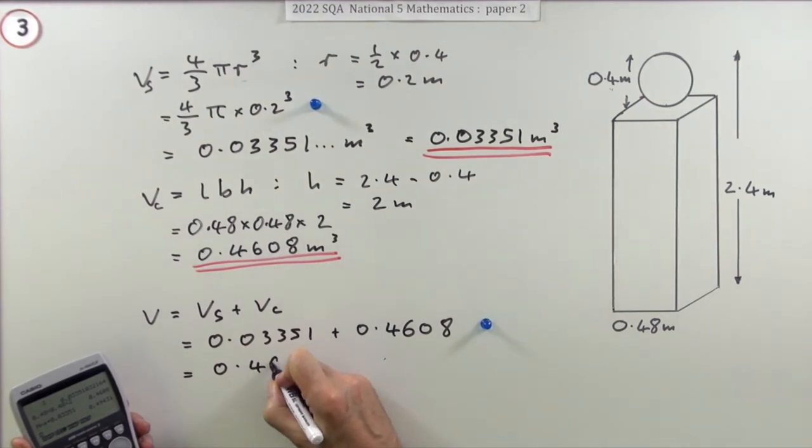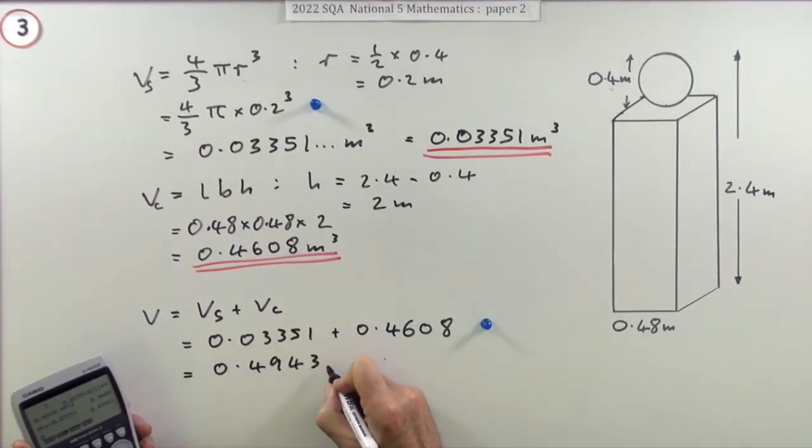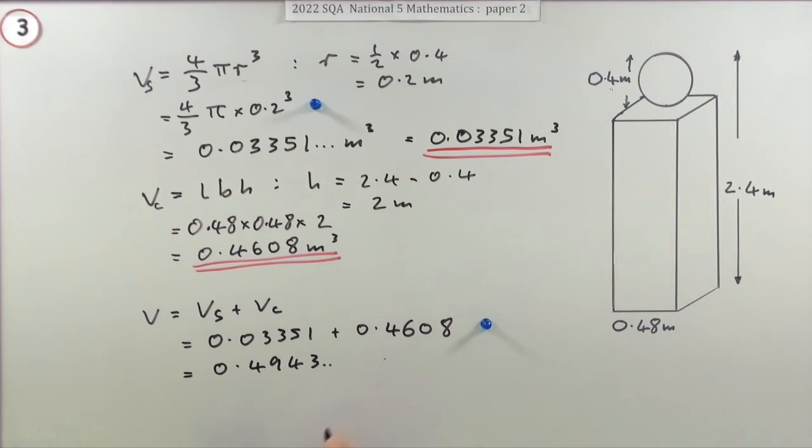Add the two together and that comes to 0.4943 and so on. I'm going to make this commensurate with the figures I've been given. I can see I've only got two figures here, so I'll just round that off to 0.49 meters cubed.